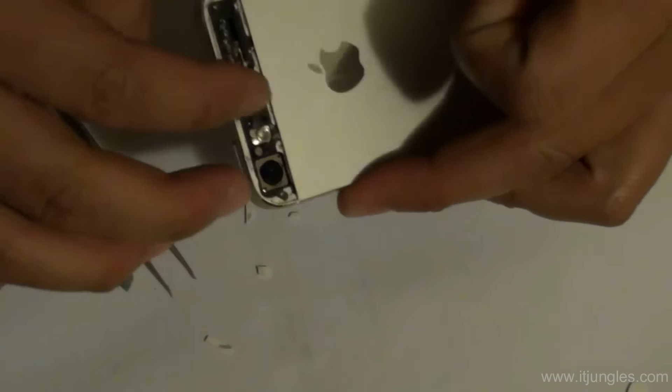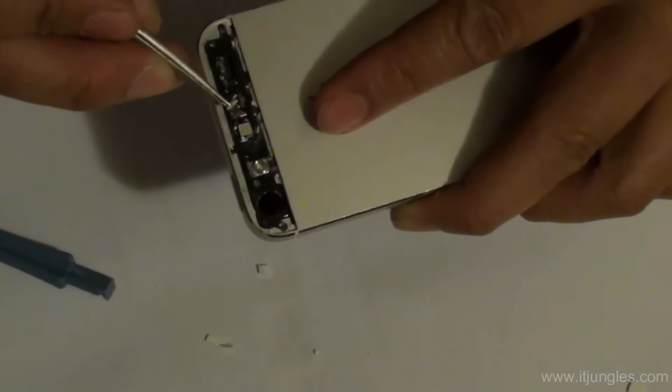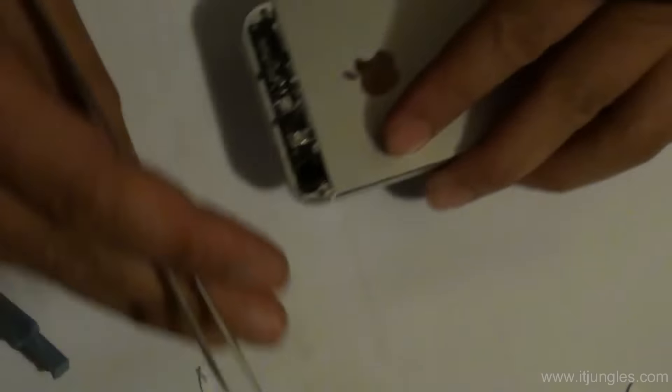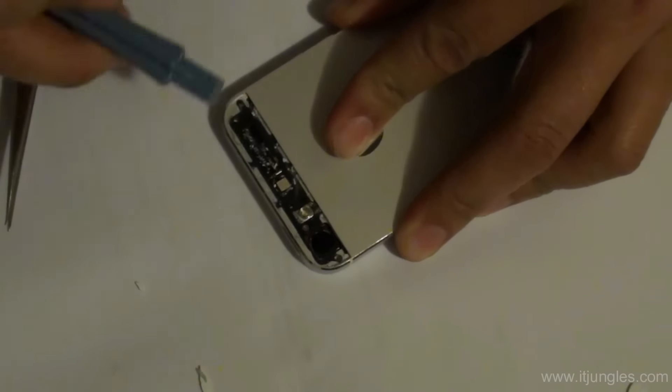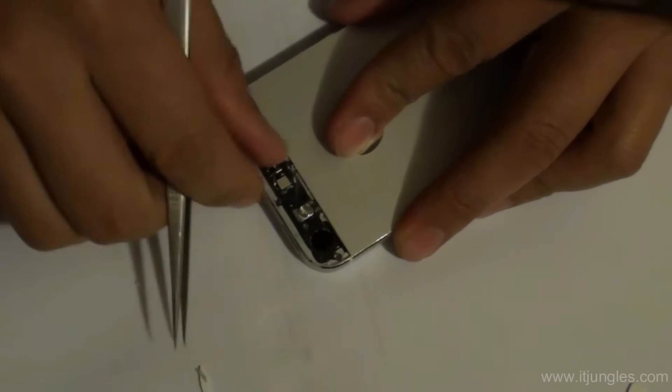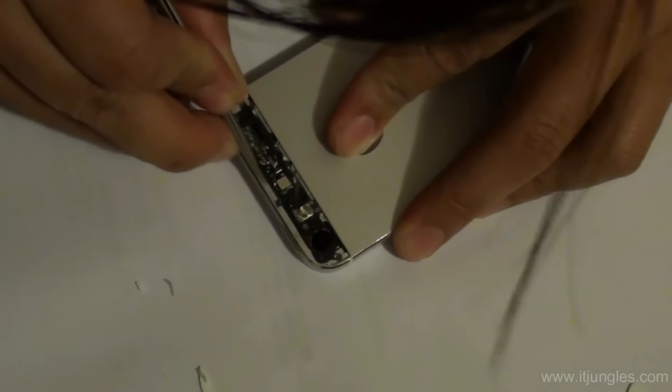Now once you got all the glass out, just go around the edge and remove any glue or adhesive that's still left over. Using a plastic tool, go around the edge and remove any glue that is left over. You can see the adhesive still left over, so make sure you remove everything before applying a new back glass on the iPhone.